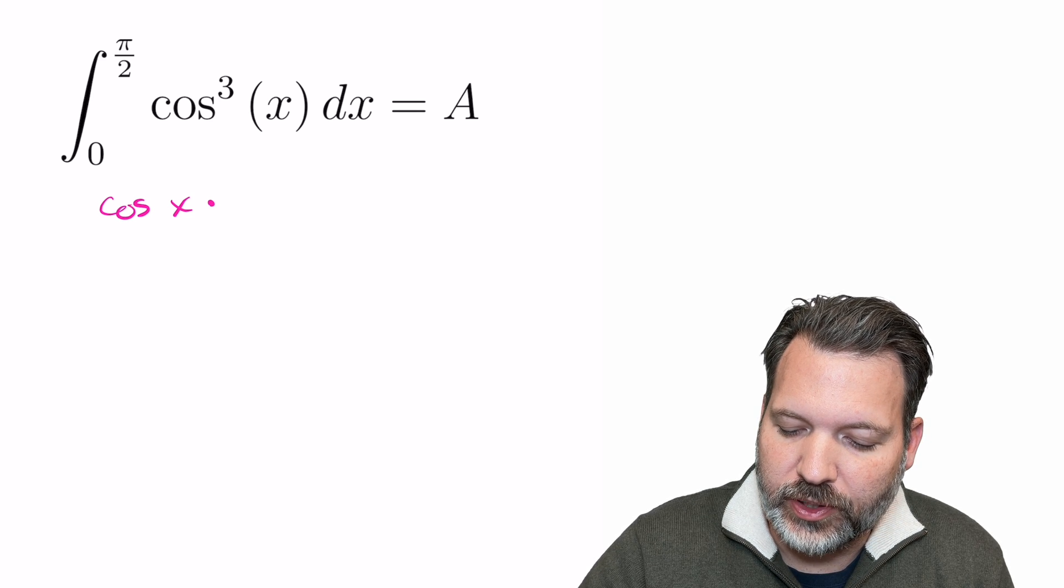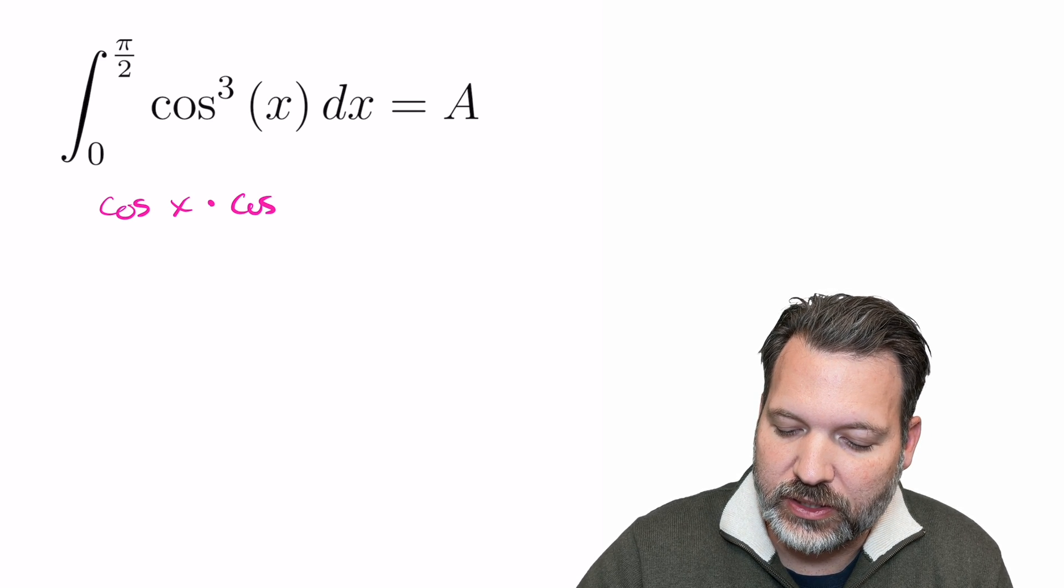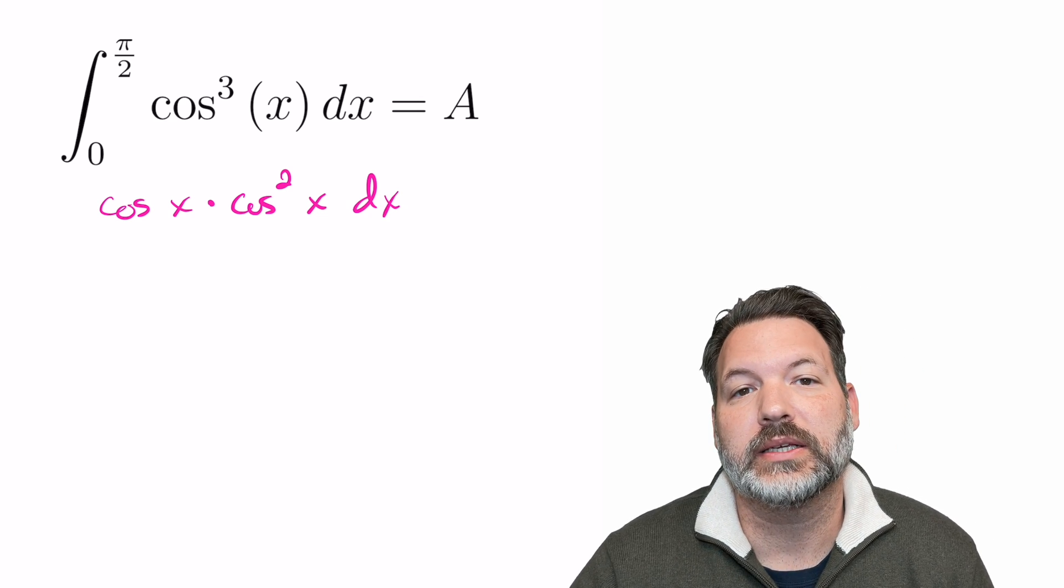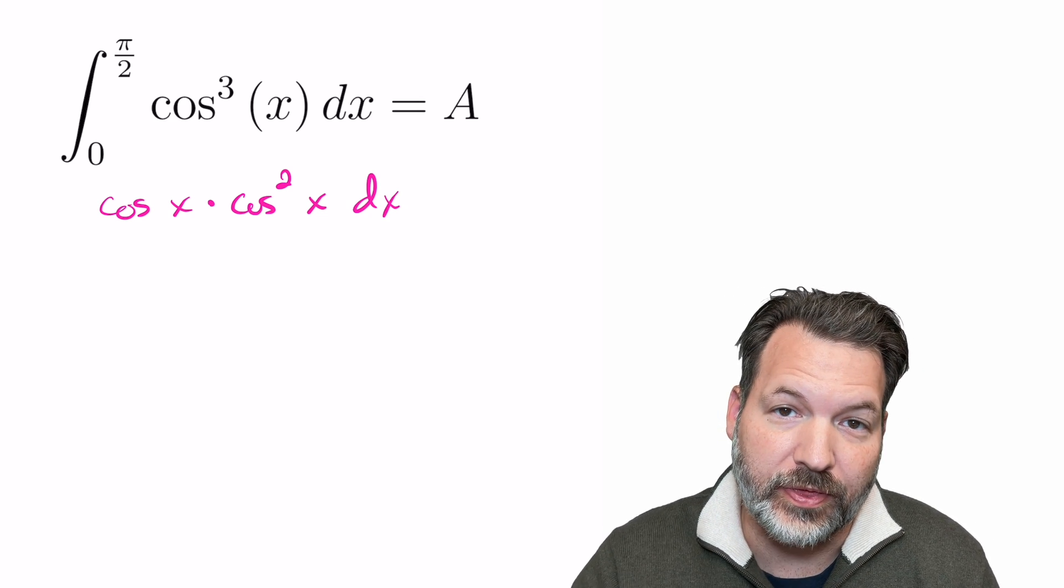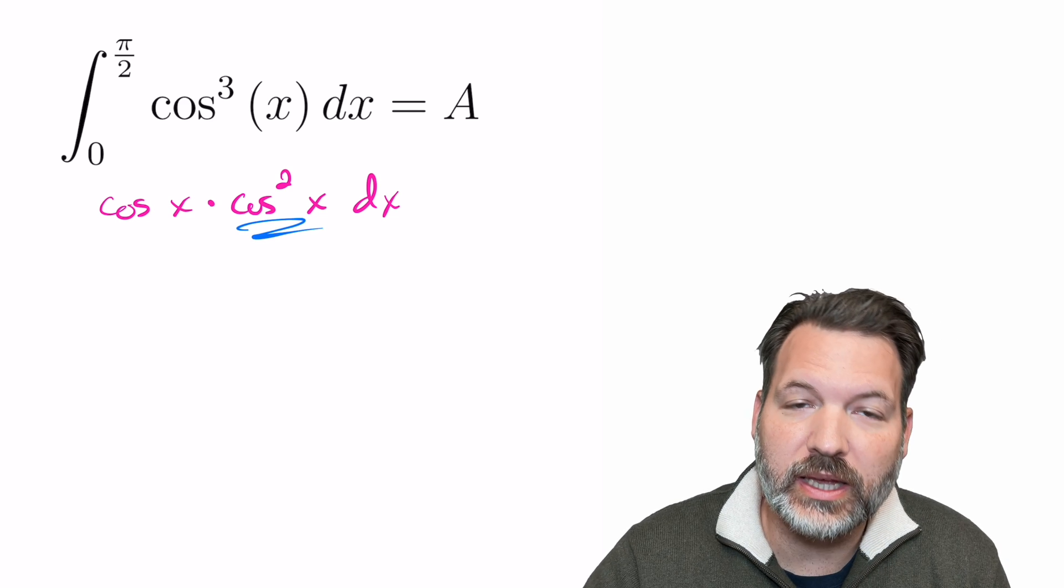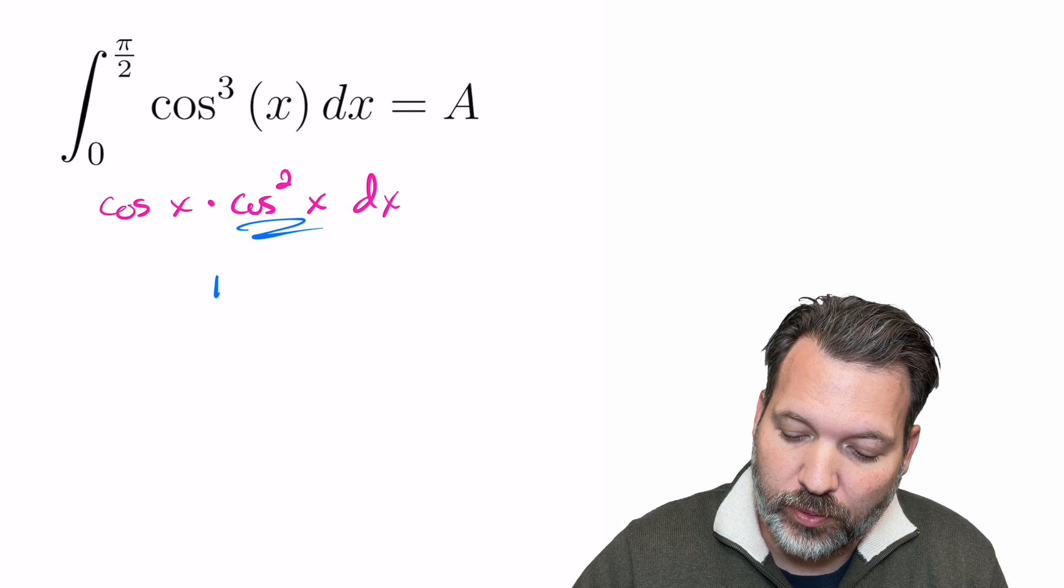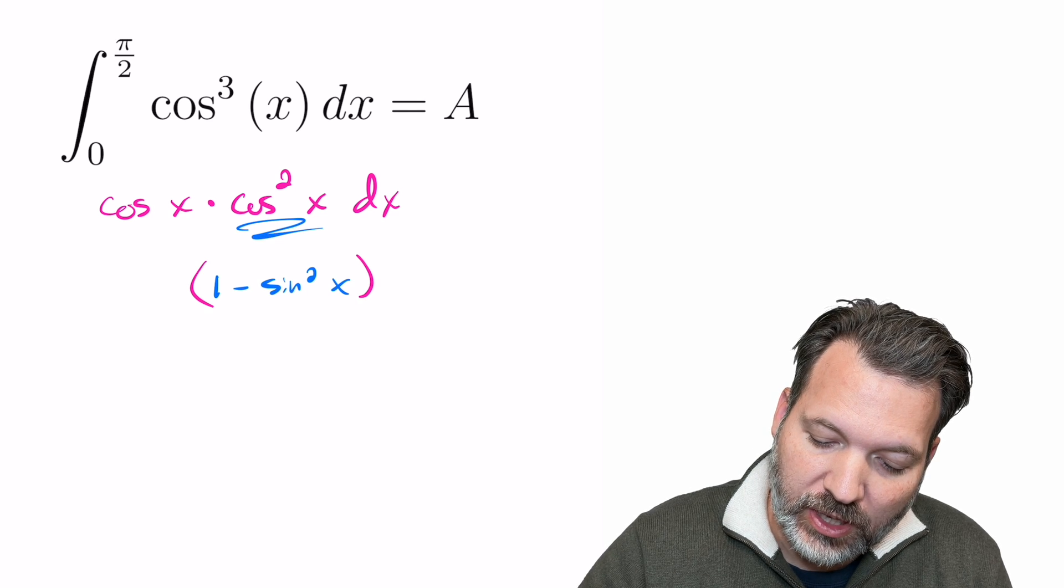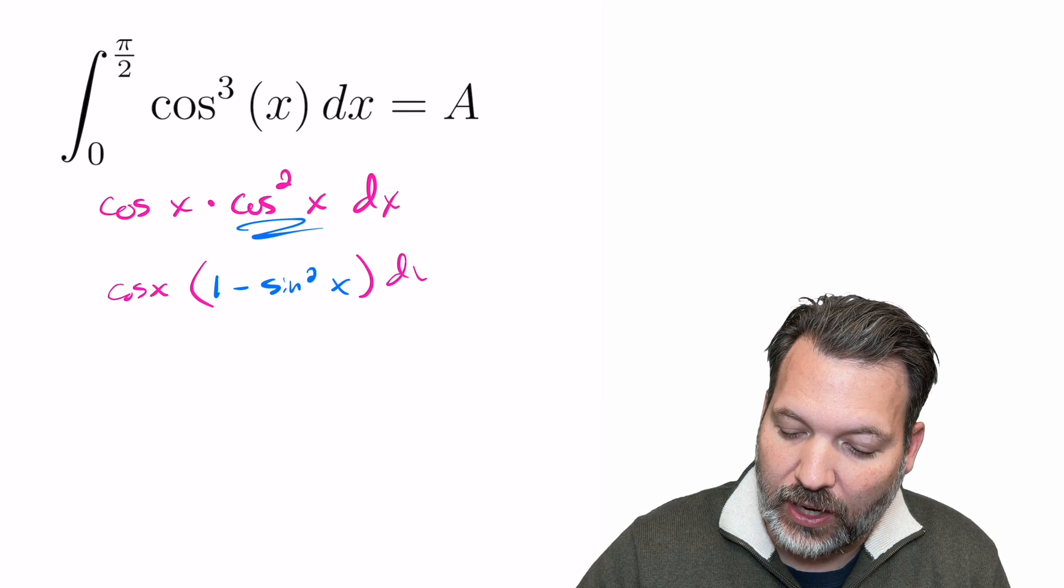To do this, the first thing I'll do is rewrite that cosine cubed of x dx as cosine x times cosine squared x dx. And from there, I want to use a Pythagorean identity. We're going to take that cosine squared x and rewrite that as one minus sine squared x, keeping of course everything else, the cosine x and the dx.